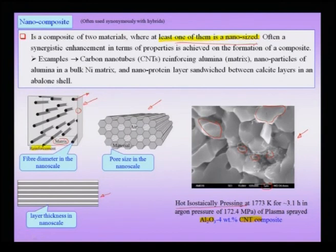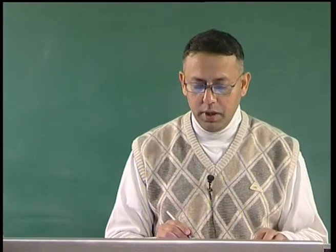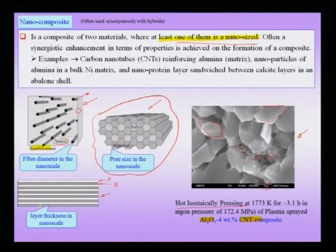In other composite examples — like a lattice structure which is a composite or hybrid of air and material — at least one of the two has to be in the nano scale: either the pore phase or the material itself. In a laminate, at least one component A or B has to be nano scale. Other examples include nano particles of alumina in a nickel matrix, or a nano protein layer sandwiched between calcite layers in an abalone shell — all examples of nano hybrids or nano composites.